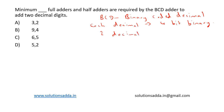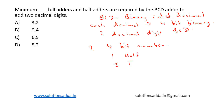For a BCD adder, to add two four-bit numbers, we require one half adder and three full adders. The half adder is for the LSB part, and for the remaining three bits we need three full adders.